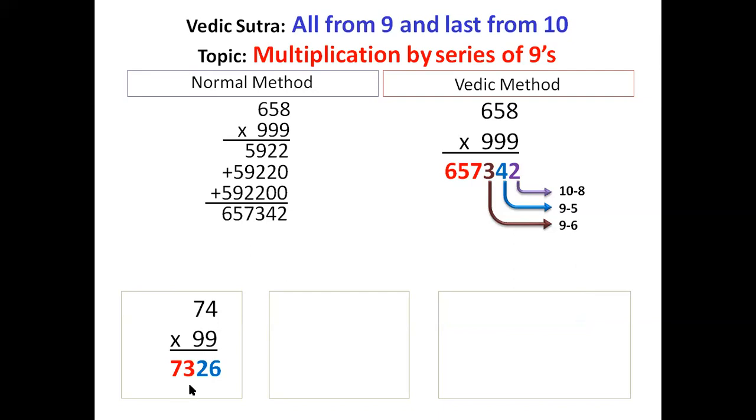And then all from 9, last from 10. 9 minus 7 is 2. And last from 10, 10 minus 4 is 6.